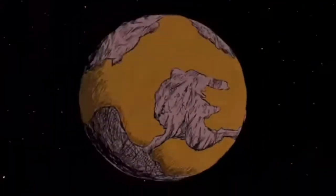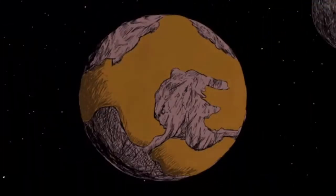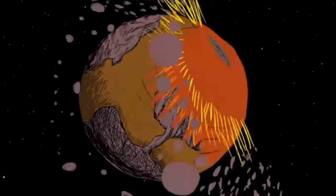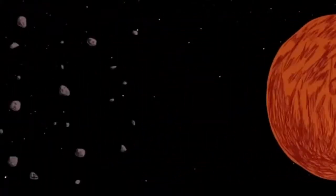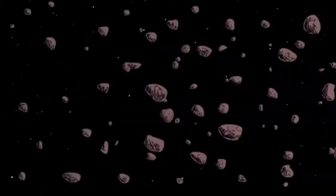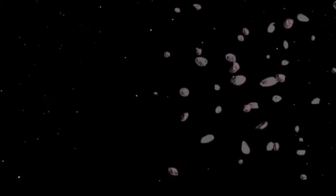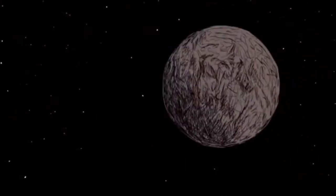The young Earth settled down, but then something about the size of Mars is thought to have slammed into the planet, causing immense change. The two bodies coalesced, and material was blasted outward. Debris from the impact formed a ring of matter that orbited the Earth and eventually became the Moon.